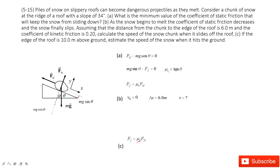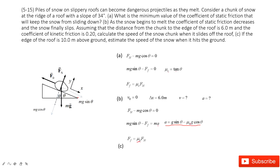We need to find the final velocity at the boundary. To do that, we must find the acceleration. We write Newton's second law: for the y-component, F minus mg cos θ equals zero; for the x-component, mg sin θ minus friction equals mass times acceleration. The friction here is μk times F. Solving these three equations gives acceleration as a function of θ and μk, both of which are given.